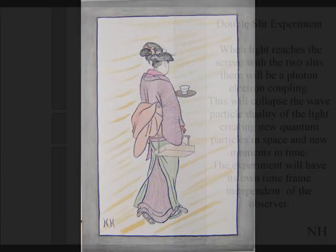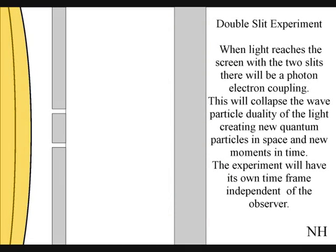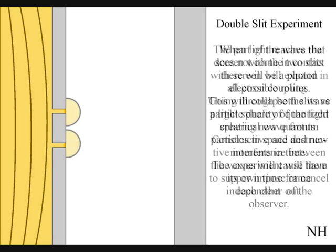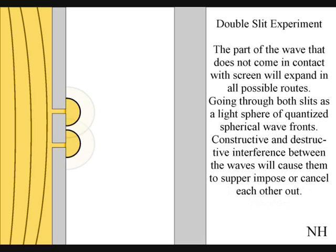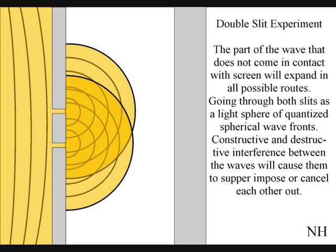The best way to see this happen directly with light is in the two-slit experiment. When light reaches the screen with the two slits, the photons will react with the electrons of the screen. This will collapse the wave-particle duality of the light, creating new quantum particles in space and new moments in time. The part of the wave that does not come in contact with the screen will go through both slits.